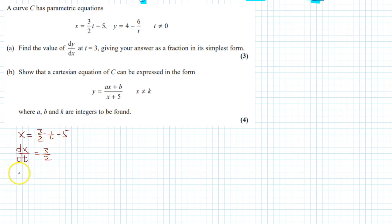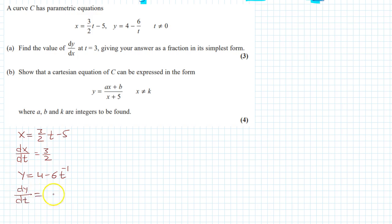Then y = 4 - 6t⁻¹, so dy/dt = -6 × (-1) × t^(-1-1), which gives dy/dt = 6/t².